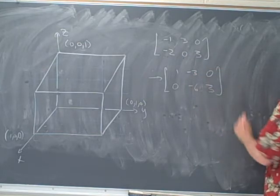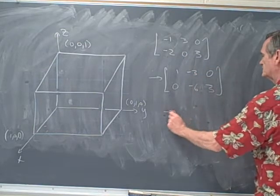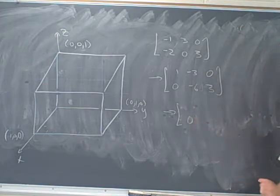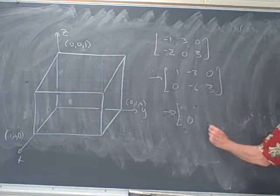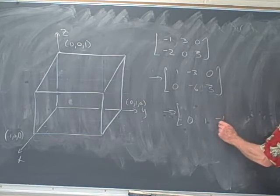And then let's divide the second row through by negative 6, so I get 0, 1, negative 1 half.